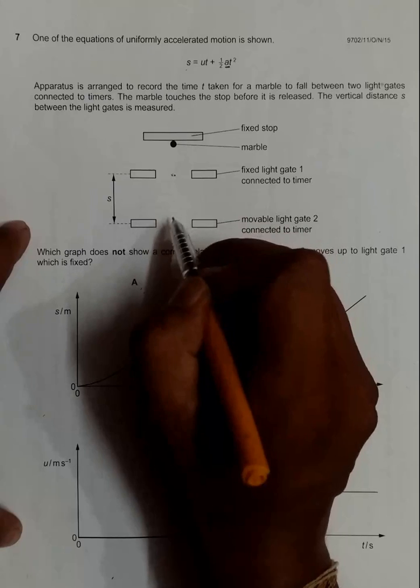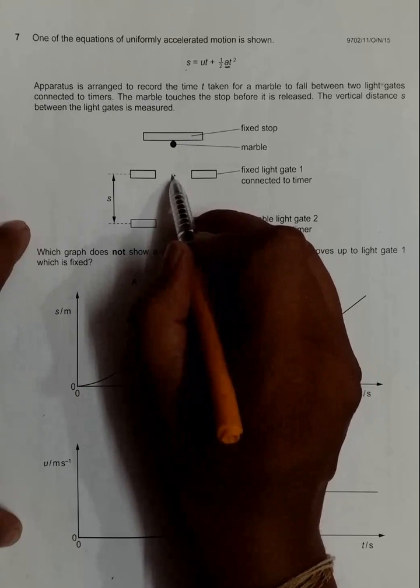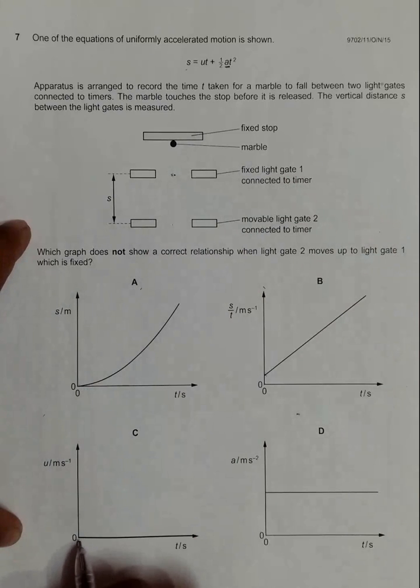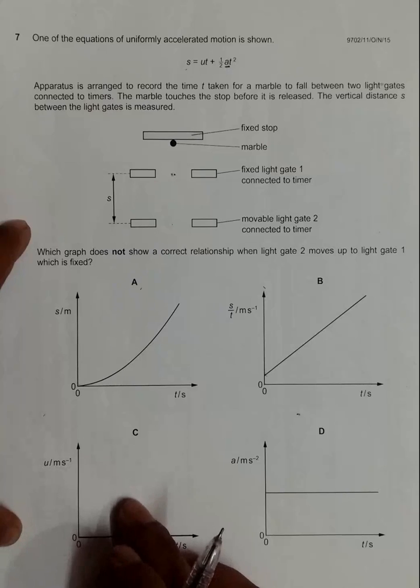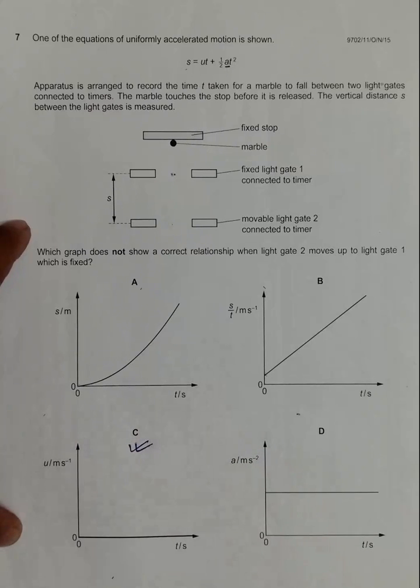There should be some sort of velocity here. Here the velocity cannot be 0, so that means this graph which shows u as 0 is the incorrect relationship. This is the right answer for this question.